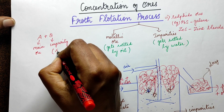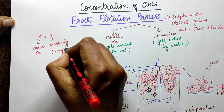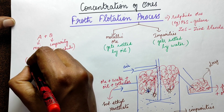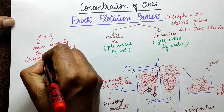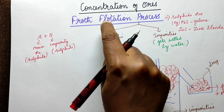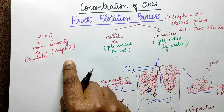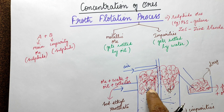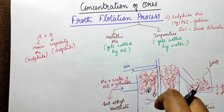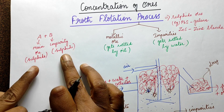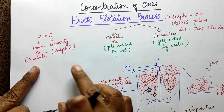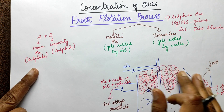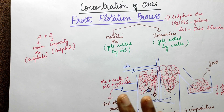So the impurity settles and what is the ore? It is the sulphide. The main ore is sulphide — the method is specific to sulfide ores. We add oil, concentrate using the oil, and collect the metallic part.